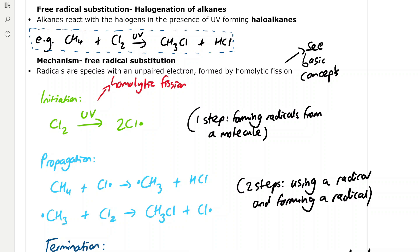For example, methane reacts with chlorine in the presence of UV light to form chloromethane and hydrochloric acid, and the mechanism for free radical substitution involves three steps: initiation, propagation and termination.